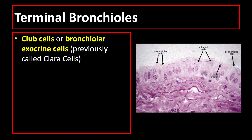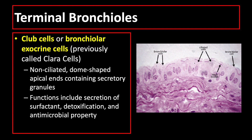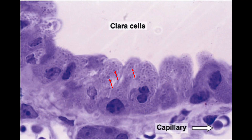The terminal bronchioles contain club cells, also called bronchiolar exocrine cells, which are histologically described as non-ciliated dome-shaped cells with secretory granules at the apical end. Their functions include secretion of surfactant, detoxification, and antimicrobial activity.